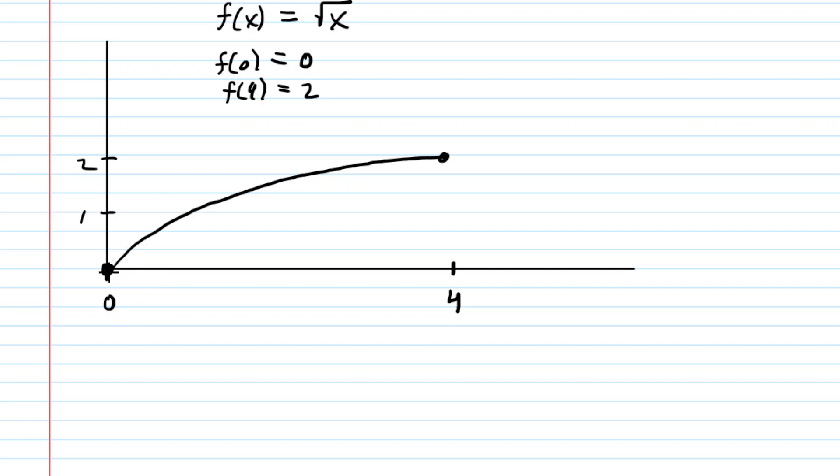Now the secant line through the endpoints is simply a line that joins those two endpoints together. So we would just draw a line connecting our left and right endpoints, and that would be our so-called secant line.